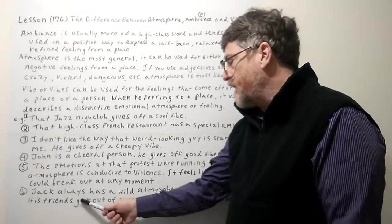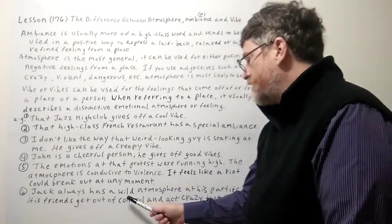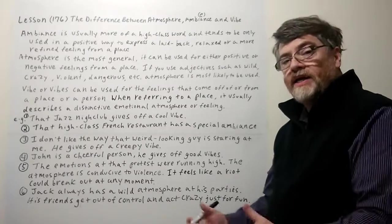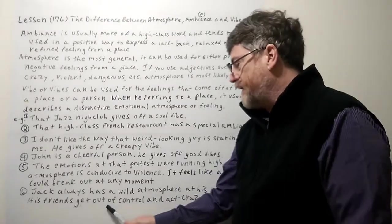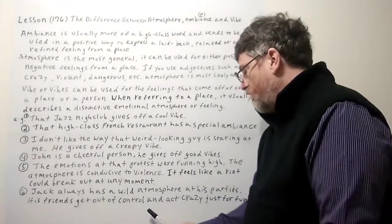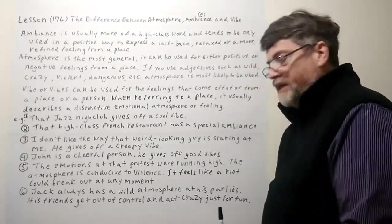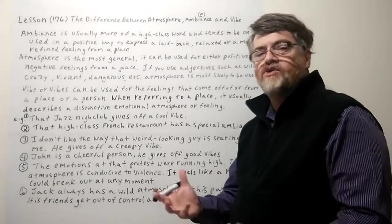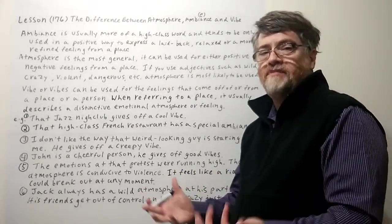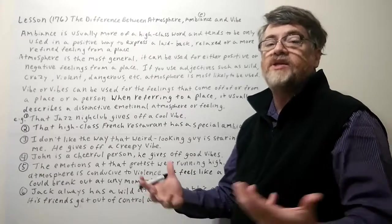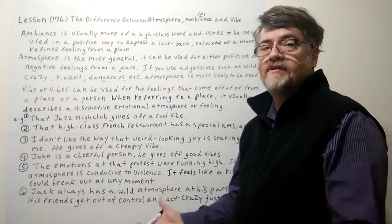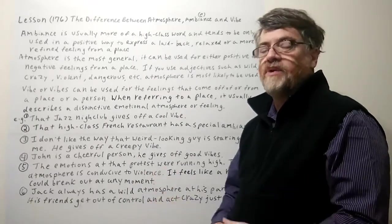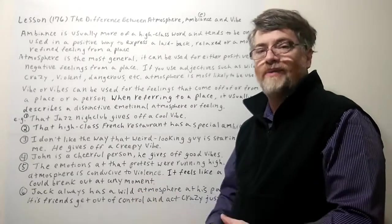The sixth example: 'Jack always has a wild atmosphere at his parties. His friends get out of control and act crazy just for fun.' This is out of control and crazy, but in a good way — people enjoying themselves. We use atmosphere here, and we would not use ambiance in that way.